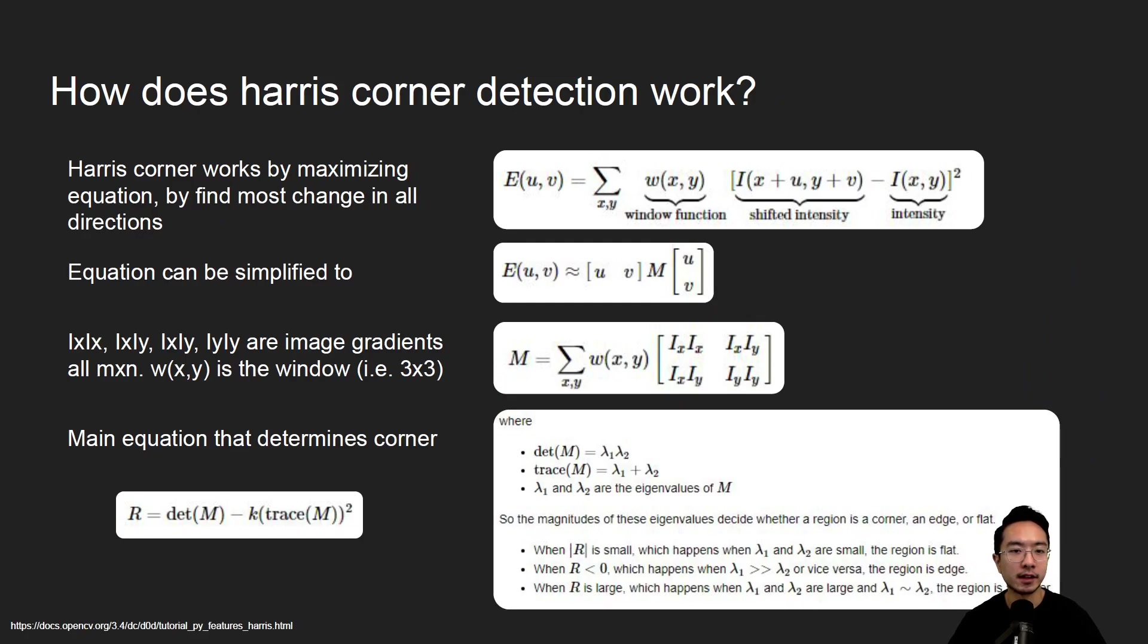So how does Harris Corner Detection work? The way it works is that it tries to maximize the equation here by finding the most change in all directions. So you have this function here, and if you imagine if you were to shift it in both the u and v direction, so essentially every direction, and you want to see which one will give the most change, then that will usually correspond to a corner.